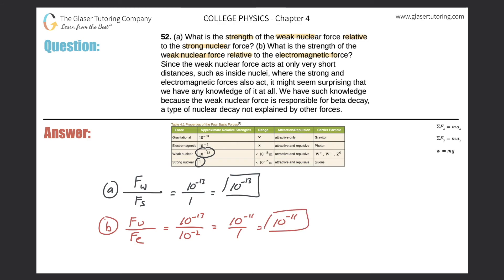So the weak nuclear force is 10 to the minus 11 times weaker than the electromagnetic force. And that would take care of letter B. And then the rest of the problem just goes on to explain something, but you can read that on your own if you like.